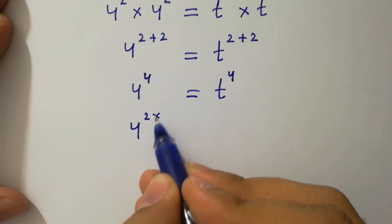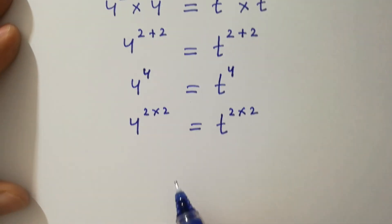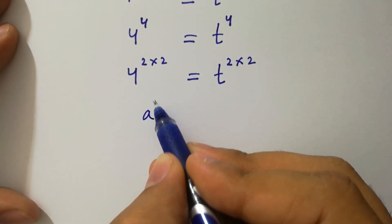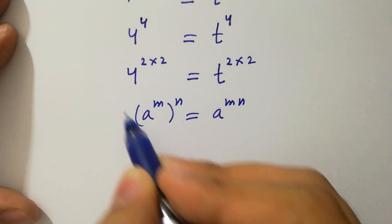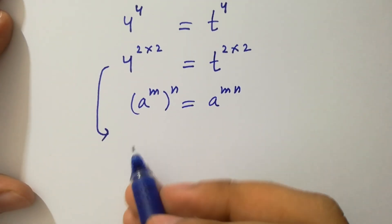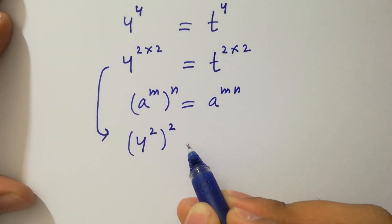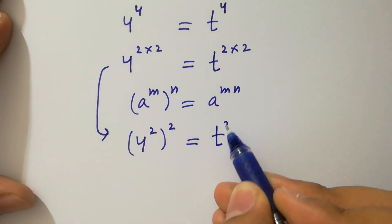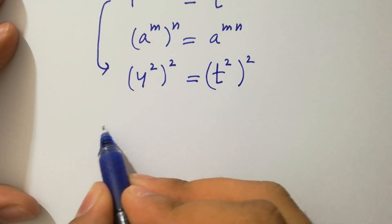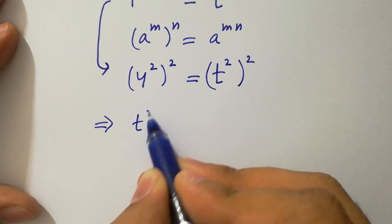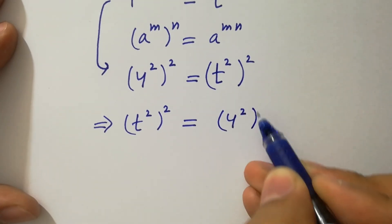Since 4 equals 2 times 2, and using the rule that a to the power m to the whole power n equals a to the power mn, we can write this as 4 square to the whole power 2 equal to t square to the whole power 2.